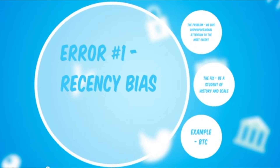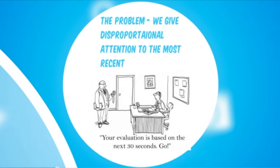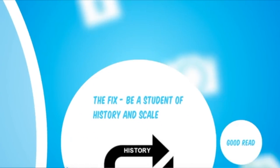Error one: recency bias. We give disproportional cognitive attention to the most recent things. In cryptocurrency, we're in the business of predicting the future, and we need to understand the past. But we put heavier weight on the more recent past, so something that happened two days ago influences our decision-making far more than something from four weeks ago - even if that older event matters far more to our future crypto prediction.